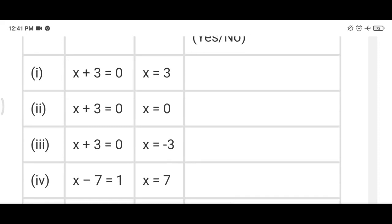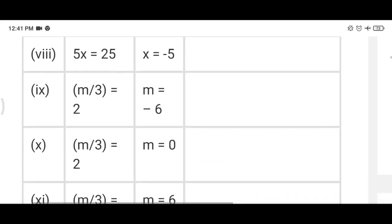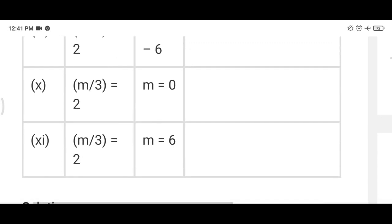And then if this equation satisfies, then we will write yes. If not, then we will write no. Here you can see this table consists of 11 equations. And we have to put the given values and then we have to see is it yes or no.